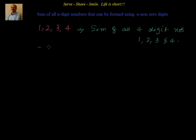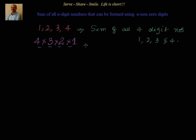Let's try to understand that first. That means I have 4 slots to be filled and I have 4 digits. Obviously the first slot can be anyone — 1 or 2 or 3 or 4, so it has 4 options. Then the second one will have only 3 options, the next one only 2 options, and the last one only 1 option. So that's nothing but 4 into 3 into 2 into 1, which we also call factorial 4, which is equal to 24.